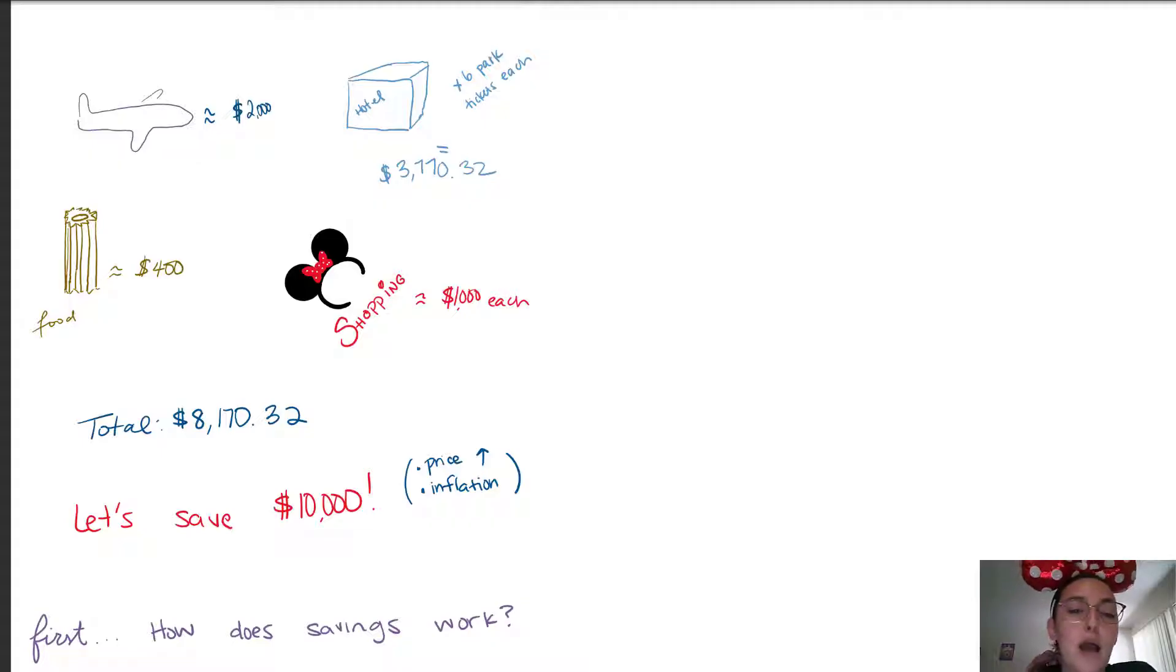The hotel plus the six park tickets, the bundle Disney hotels, thirty seven hundred dollars. The food was going to be about four hundred dollars because we're really cheap and we'll bring our own food. We like to go shopping and buy these ears that I'm wearing, so approximately a thousand dollars each so that we can come back with a lot of stuff.